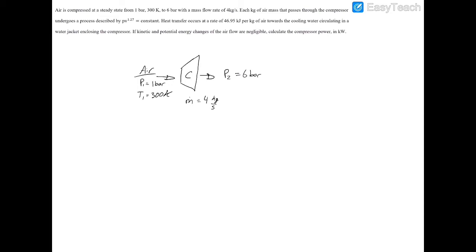Next, we're told that the process has the equation described by PV, pressure volume, to the 1.27, is equal to a constant. Next, we're told that heat transfer occurs outwards of the compressor, 46.95 kilojoules per kilogram, and that's out of the compressor and into the surrounding water. We're told we can neglect the kinetic and potential energy effects, and we have to calculate the power of the compressor in kilowatts.